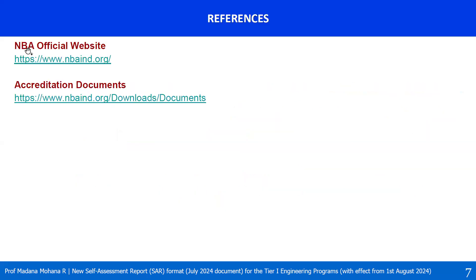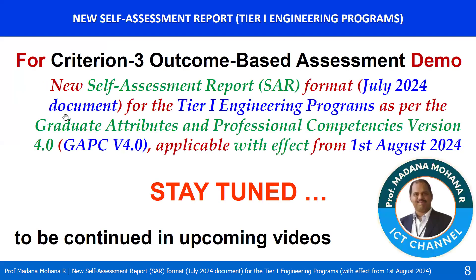This is the NBA official website: www.nbaind.org. In this official website, under accreditation documents, you can see Tier 1 institutions, undergraduate engineering programs, and the new self-assessment report and its pre-qualifiers. The evaluation guideline is not yet released. In our upcoming videos, we will see Criterion 3, that is Outcome-based Assessment. Stay tuned till that time.